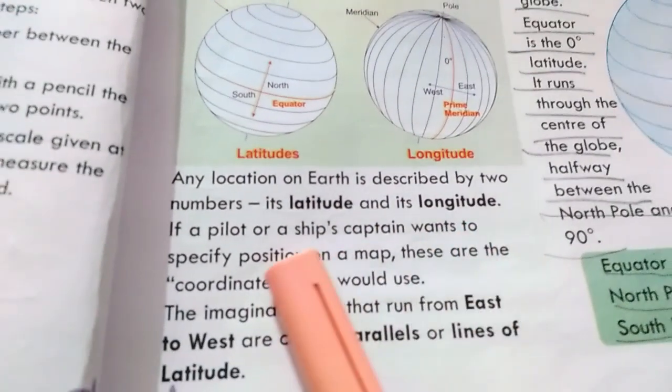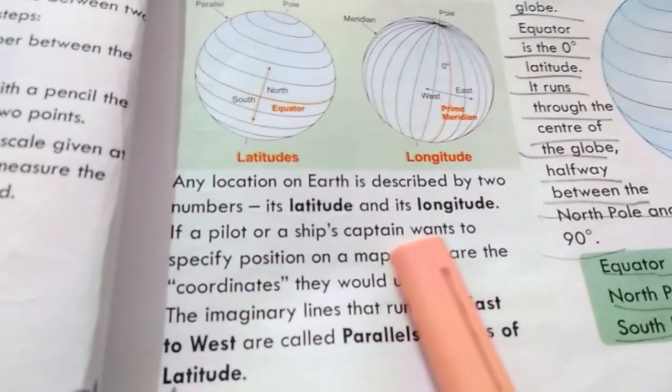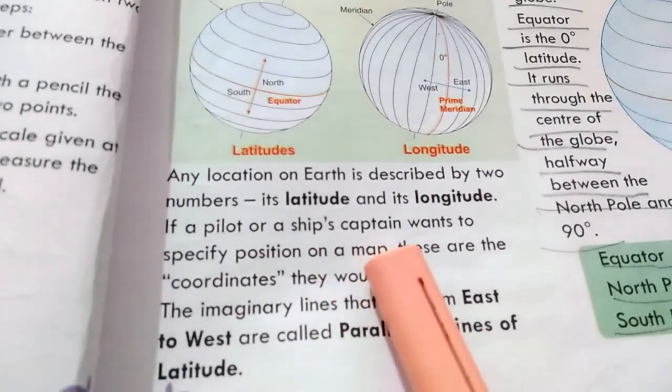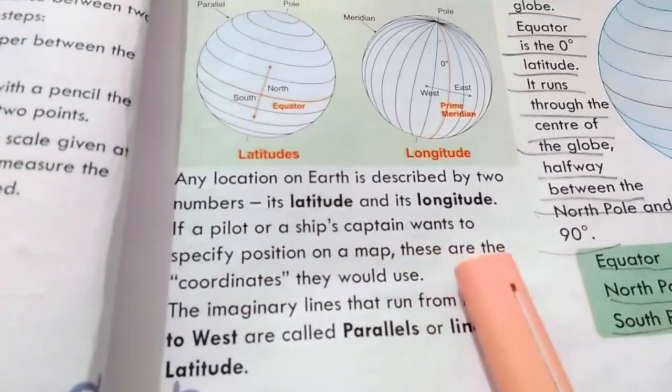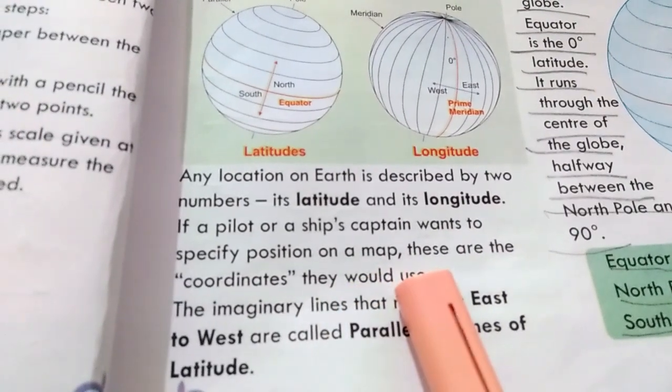If a pilot or a ship captain wants to specify a position on a map, these are the coordinates they would use — latitude and longitude.